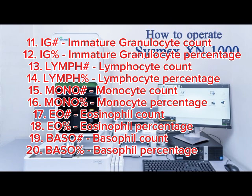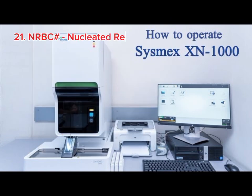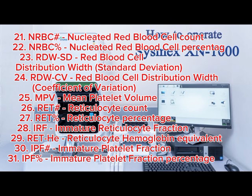19: BASO# – Basophil Count. 20: BASO% – Basophil Percentage. 21: NRBC# – Nucleated Red Blood Cell Count. 22: NRBC% – Nucleated Red Blood Cell Percentage. 23: RDW-SD – Red Blood Cell Distribution Width Standard Deviation. 24: RDW-CV – Red Blood Cell Distribution Width Coefficient of Variation. 25: MPV – Mean Platelet Volume.